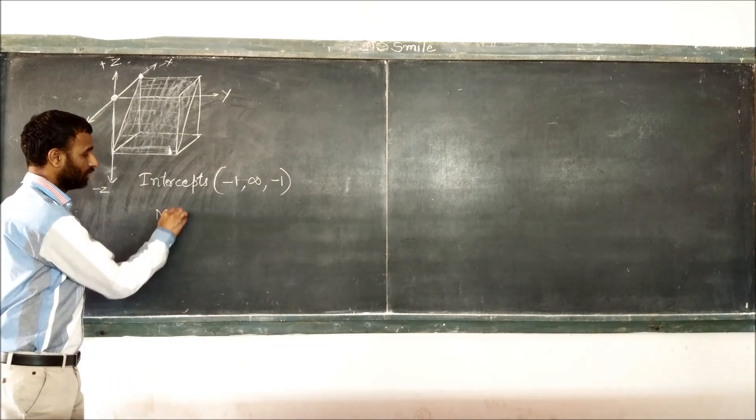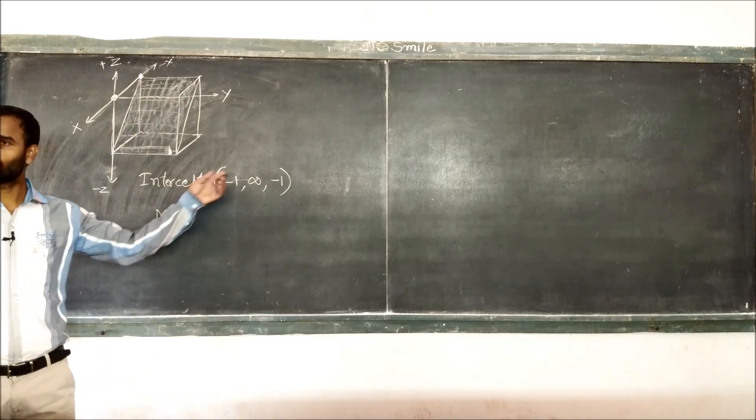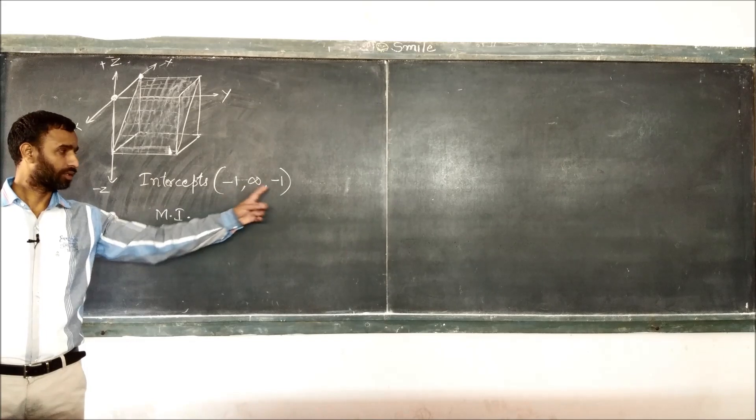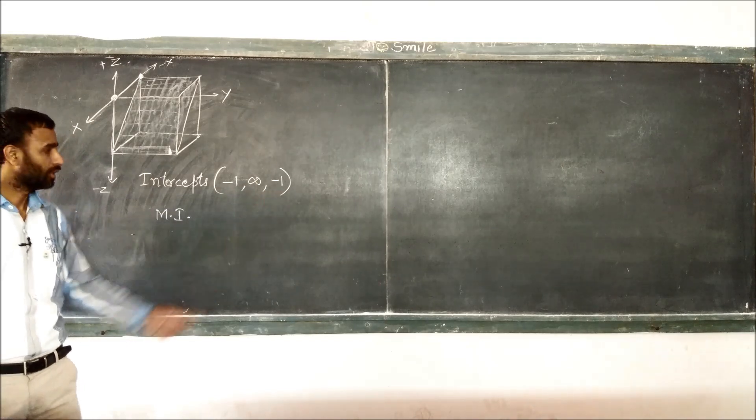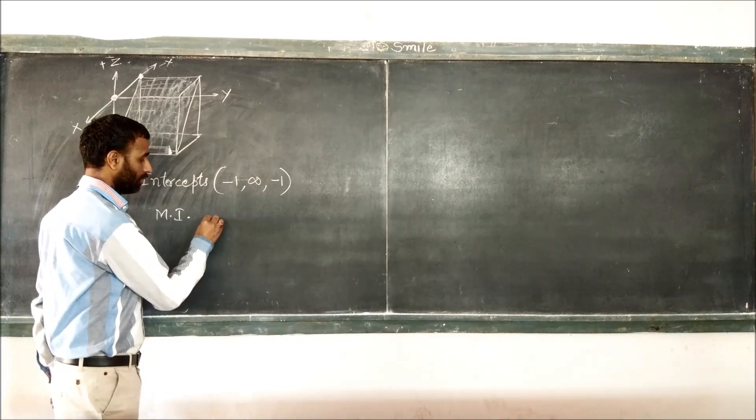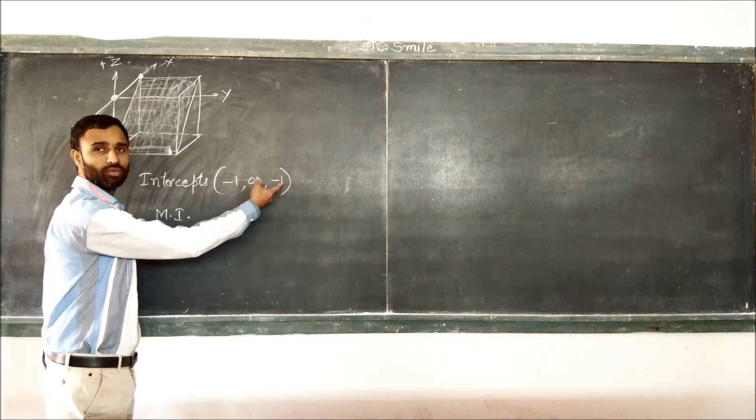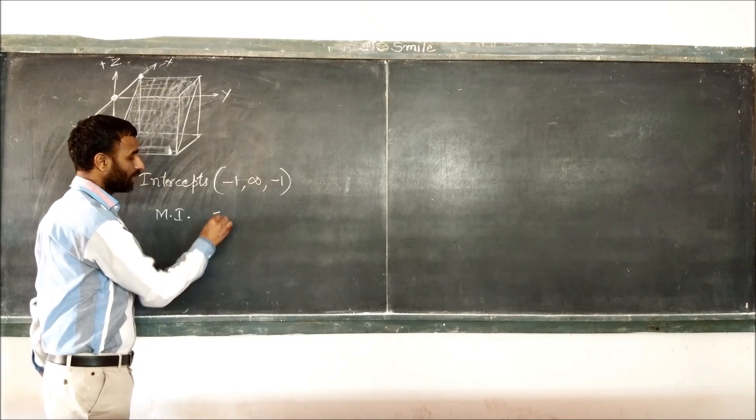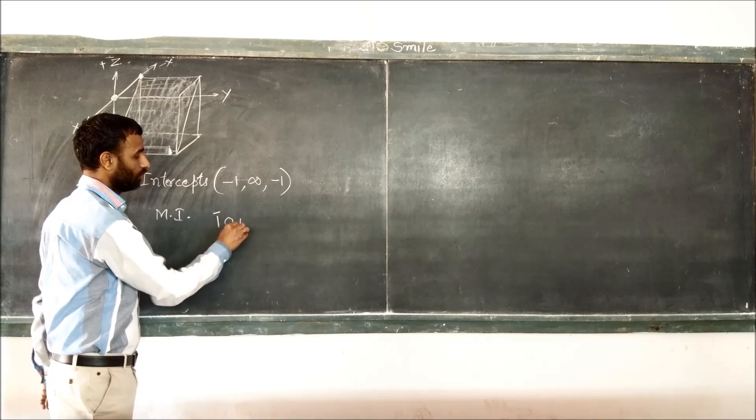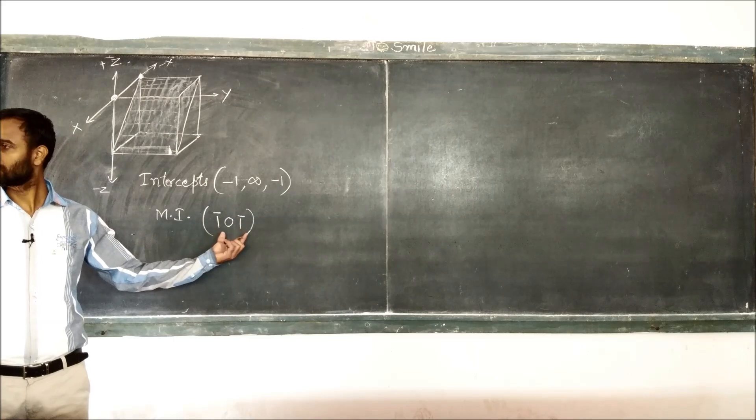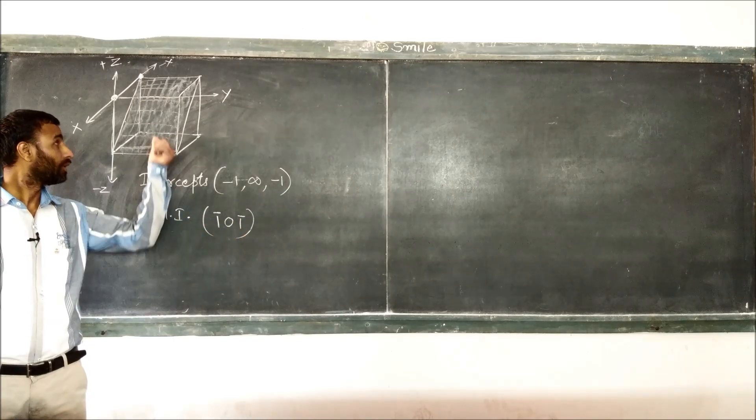Miller indices, just reciprocate. Now, when we take reciprocal of these intercepts, it comes down to which? Minus 1, 0, minus 1. It is written as 1 bar, 0, 1 bar. These are the Miller indices for this plane.